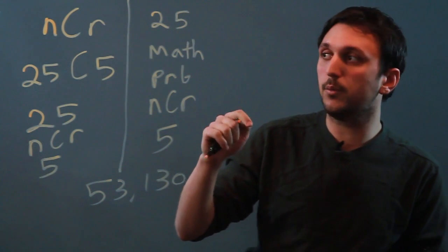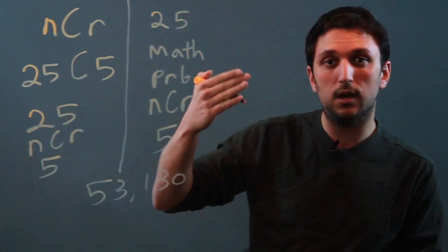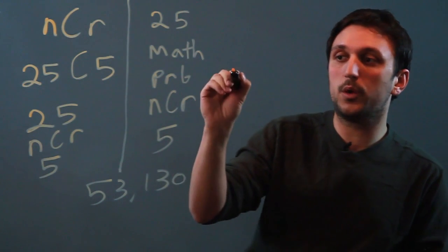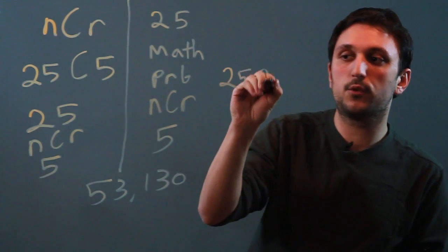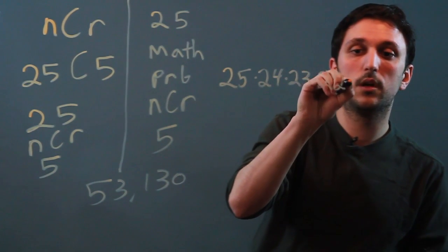With a combination, you're dealing with two kinds of permutation. One for the total number of possibilities, and then you have to eliminate the repeats. So we would say 25 times 24 times 23 times 22 times 21,